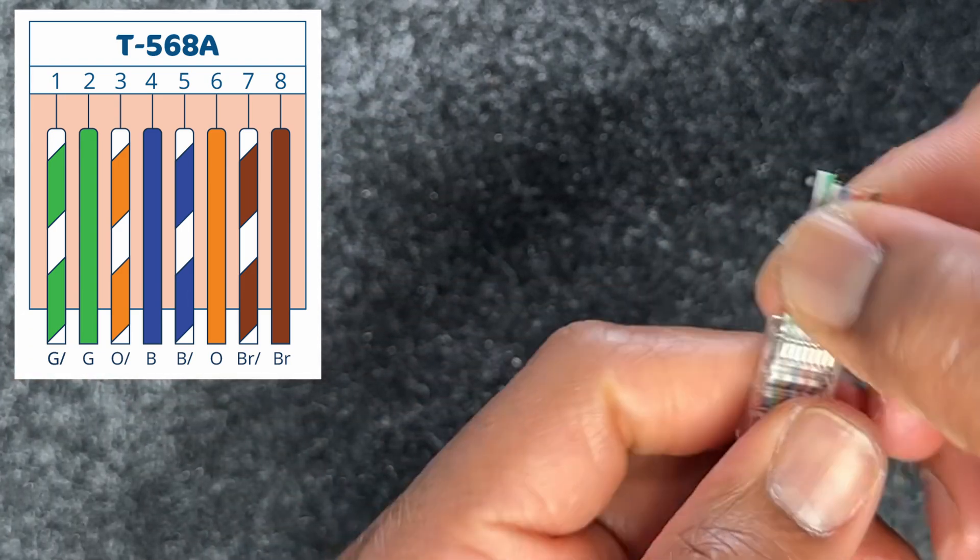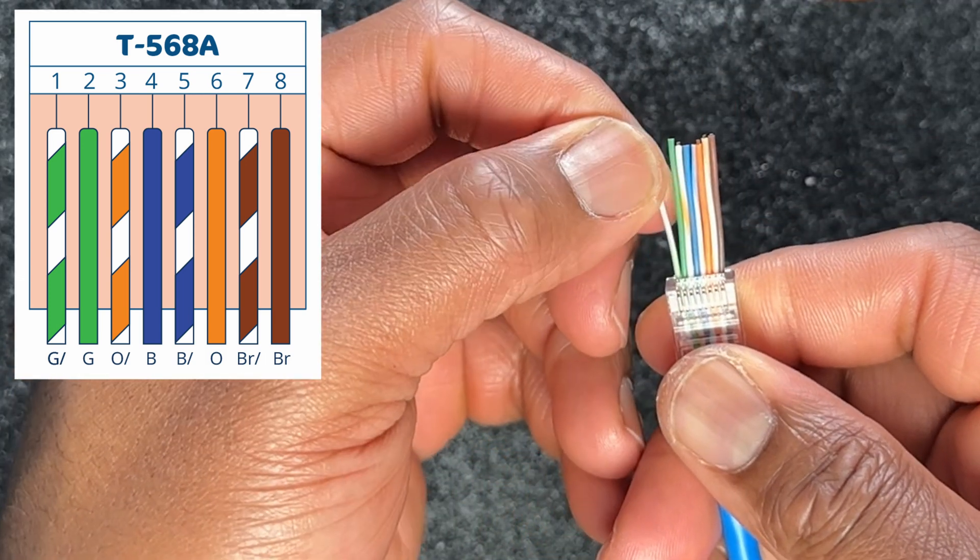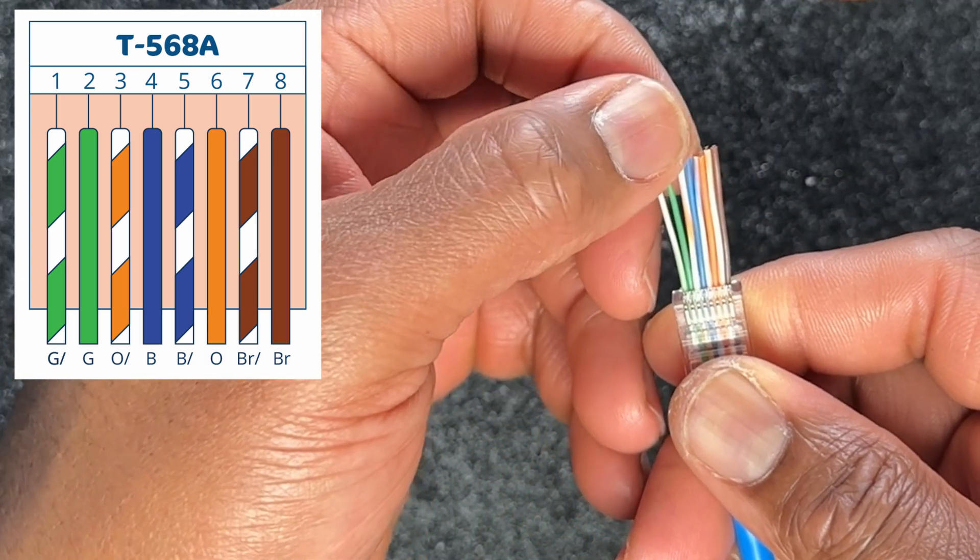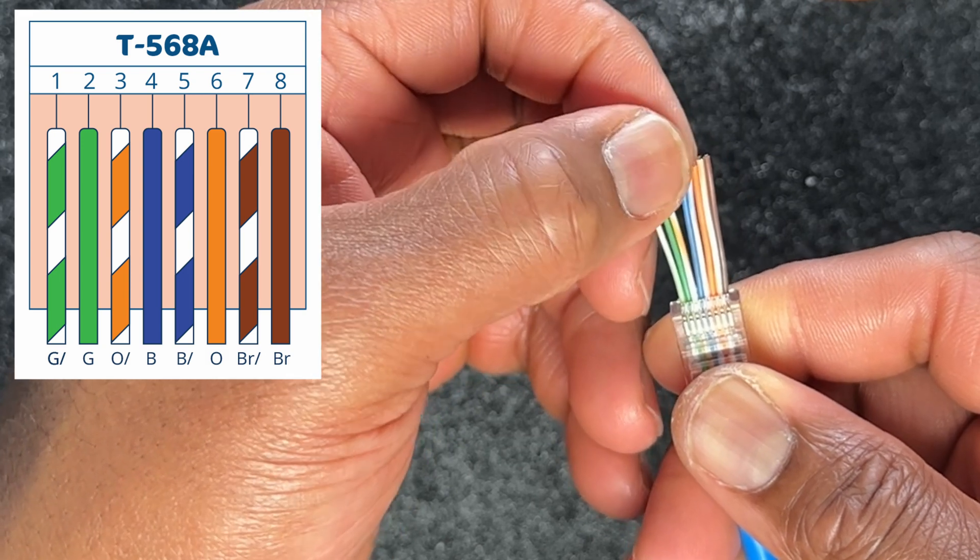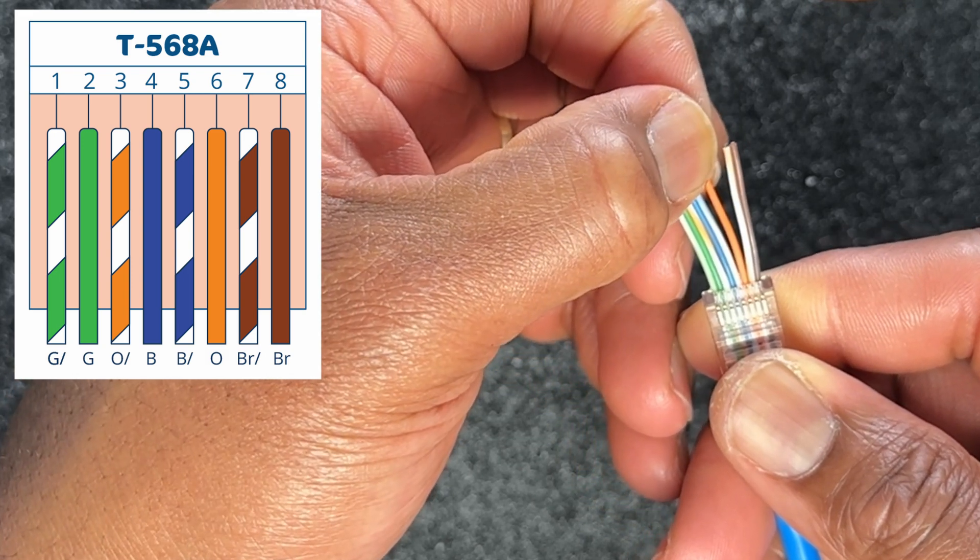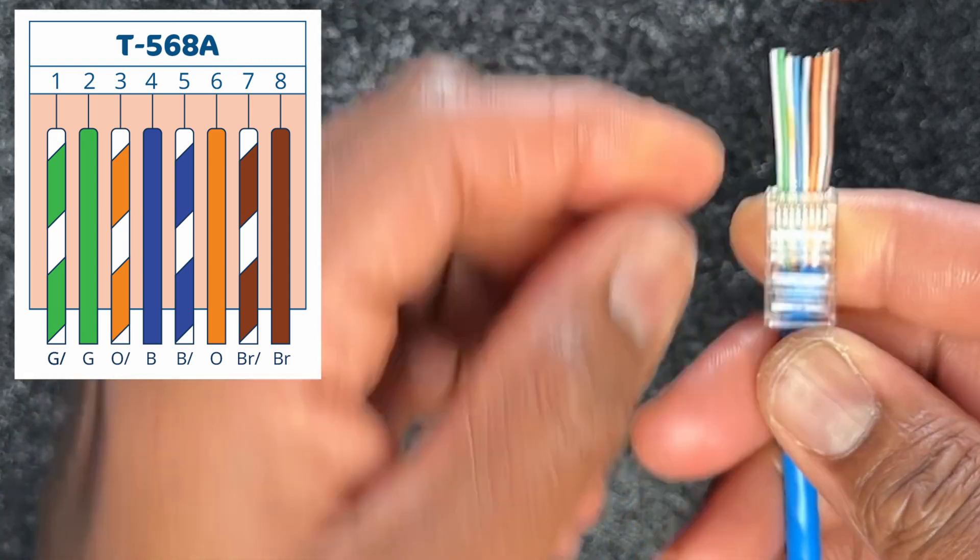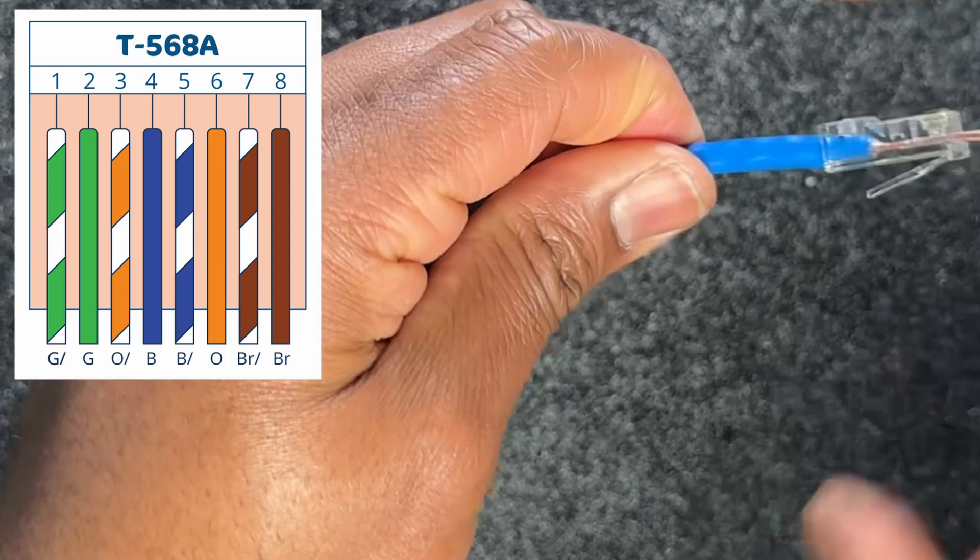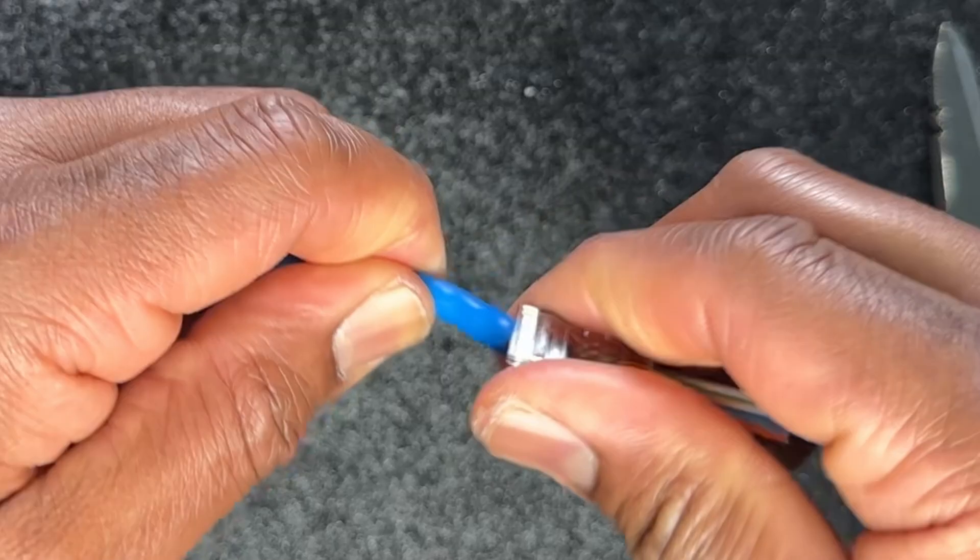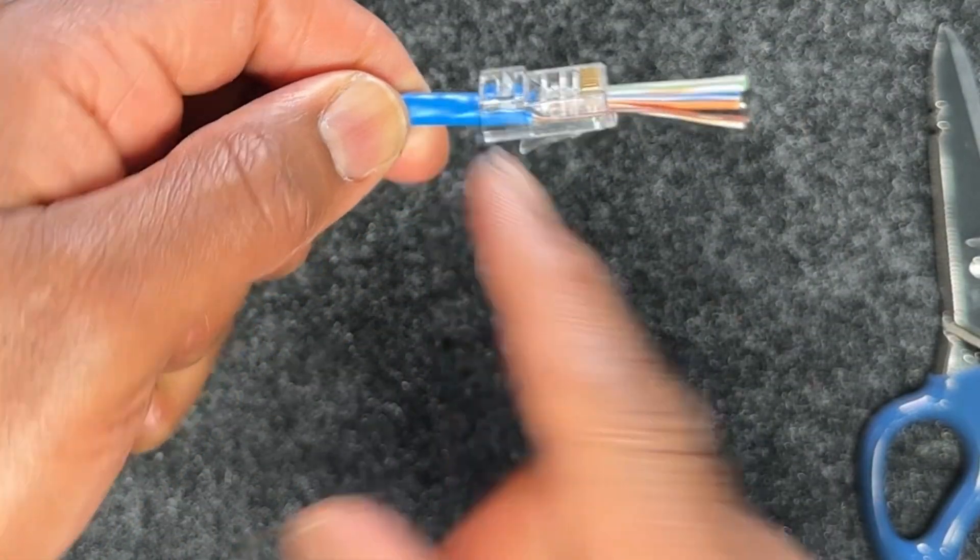Now I'm going to verify it again. White green pin one, solid green pin two, white orange pin three, solid blue pin four, white blue pin five, solid orange pin six, white brown pin seven, and solid brown pin eight. So my pinout is now correct. I have enough of the jacket going through all the way to the end.